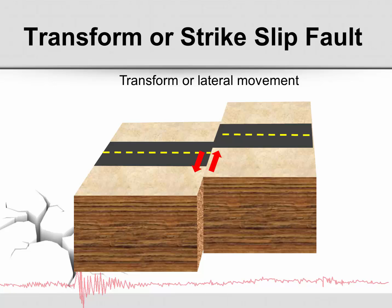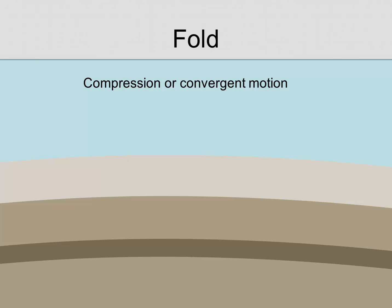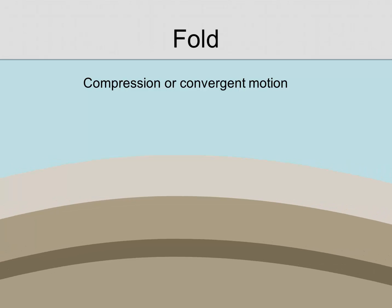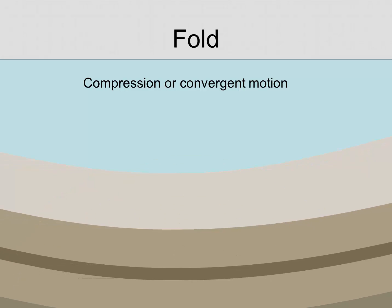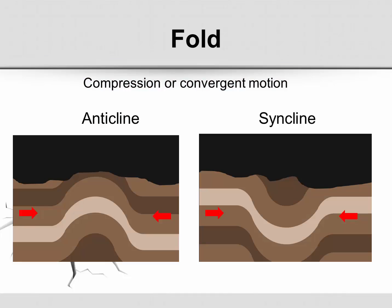While sometimes rocks break with faults, sometimes they're soft enough to fold. A fold occurs with compression or convergent motion. Sometimes rock layers may fold with an upward bend; other times they may form with a downward bend. An upfold is referred to as an anticline, and the downward or U-shaped fold is referred to as a syncline.